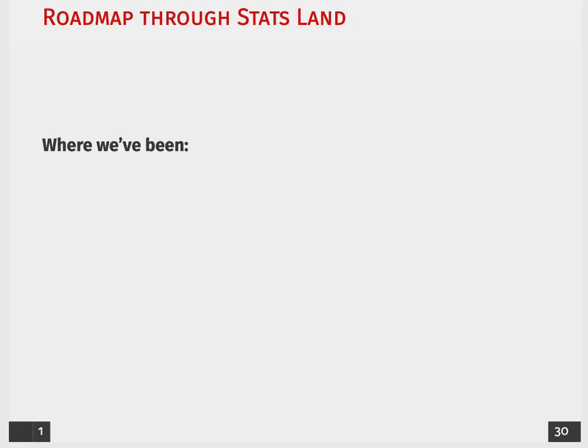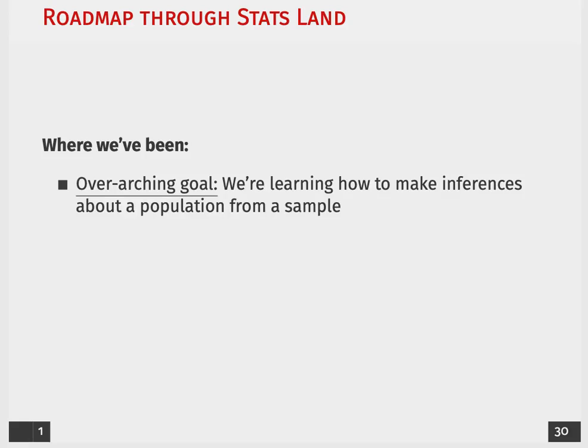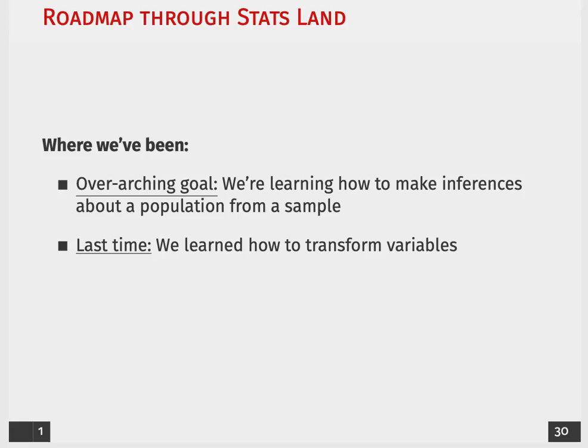As you might remember, our overarching goal every week is that we're trying to make inferences from a given sample to an overarching population. Last week we talked about how to transform variables given skewness and non-constant variance, as well as how to deal with issues of co-linearity.